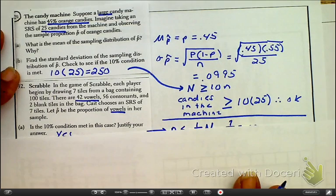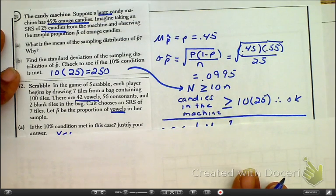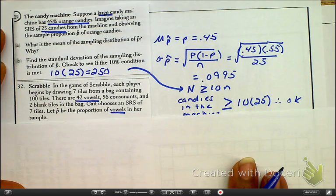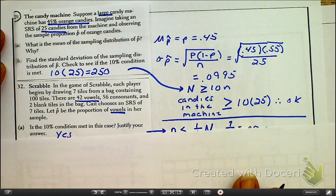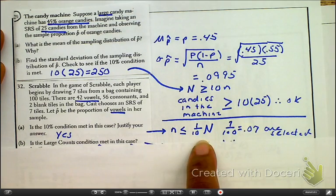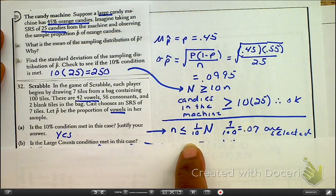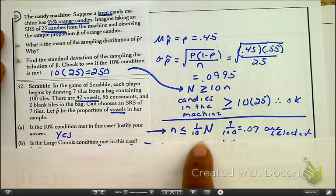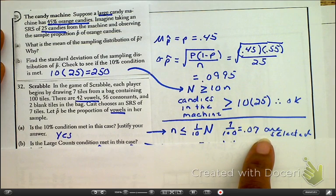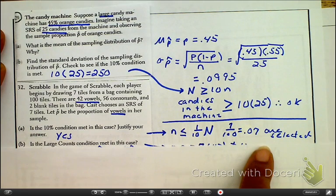Next, let's look at the next problem. Now, pause if you haven't already paused. So, here, the 10% condition, yes, it has been met. And I'm going to do it slightly different here. Because here, as we look at the idea of the sample size being less than or equal to one-tenth of the entire population, this is the percentage that is collected or selected, and that means, therefore, it is reasonable.